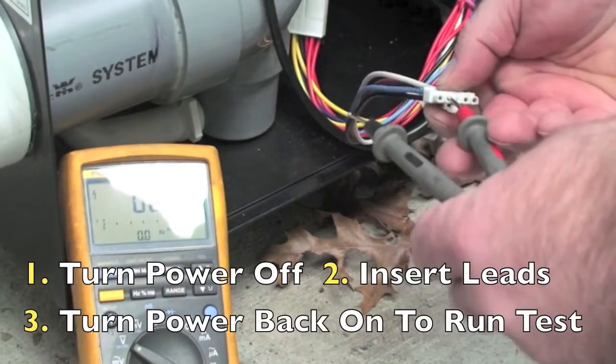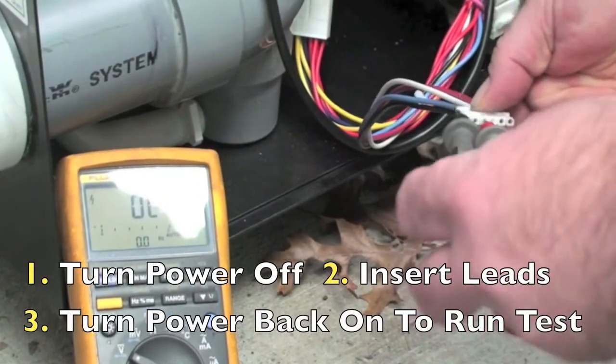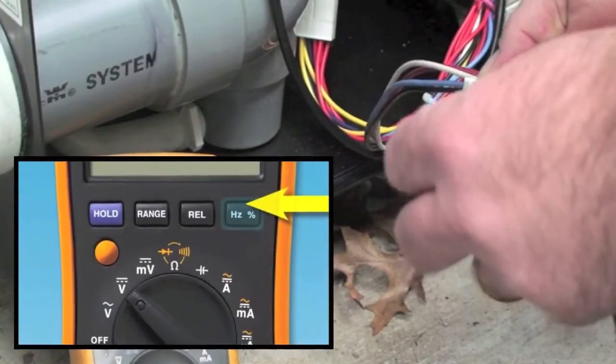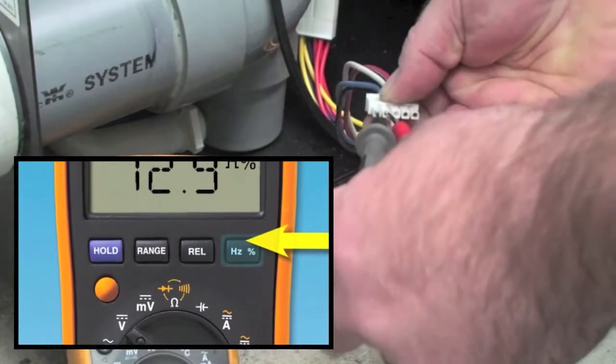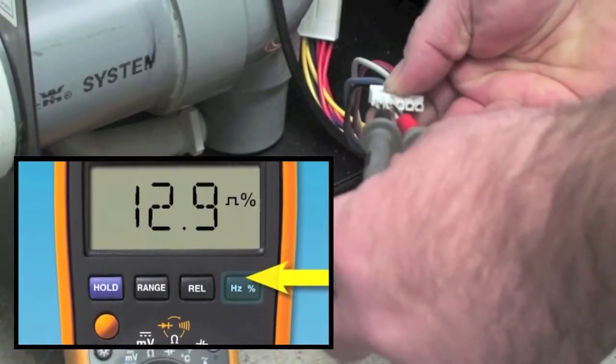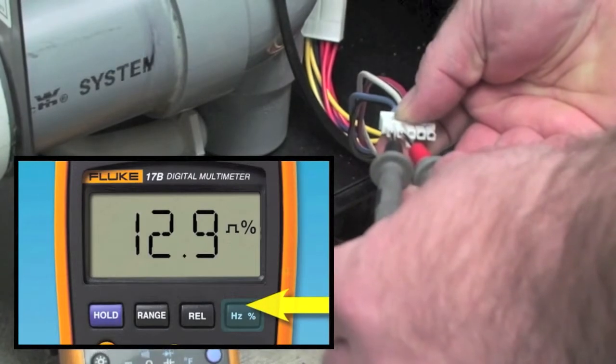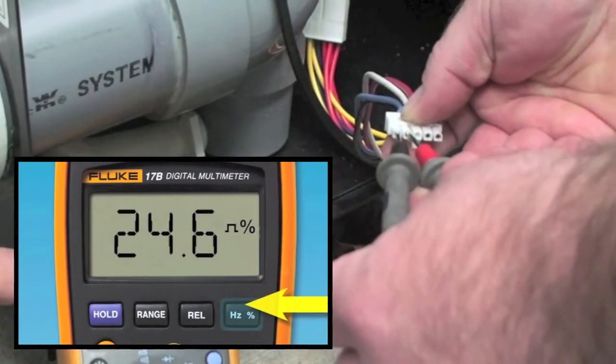You will need to shut off the power and disconnect the Molex to the fan. Next, take your meter leads and insert the black lead into the blue lead in the wire harness. Then insert the red lead into the black lead into the wire harness and watch the duty cycle until it reaches 100%.